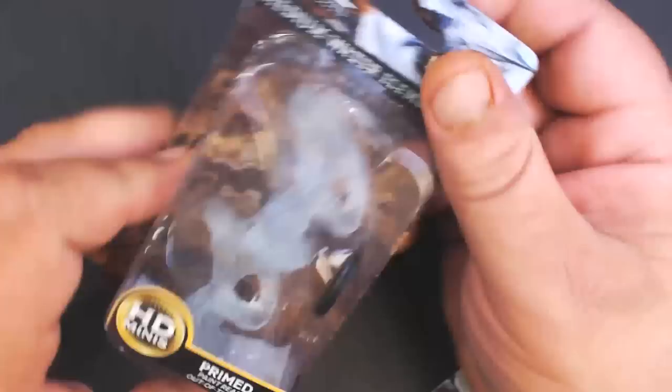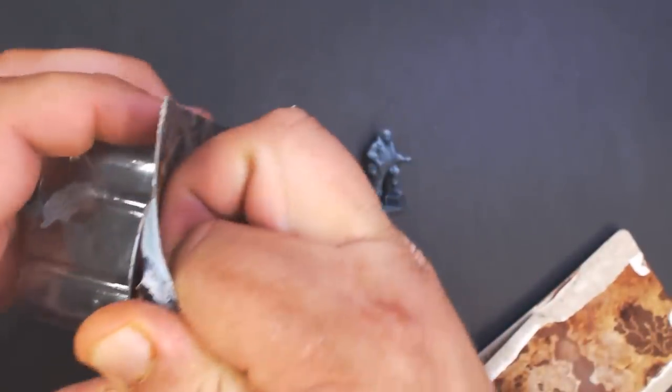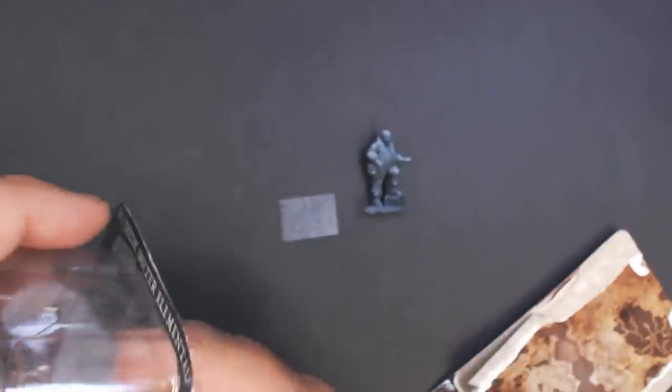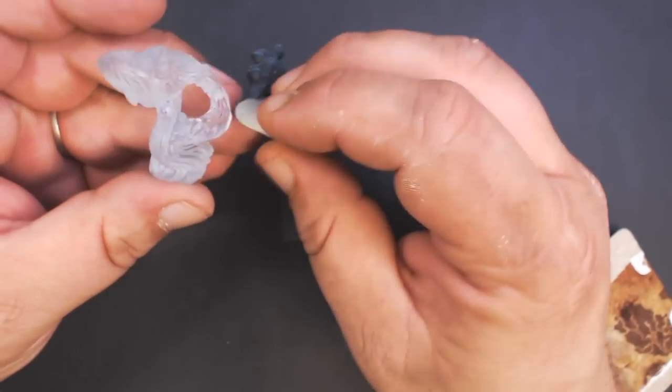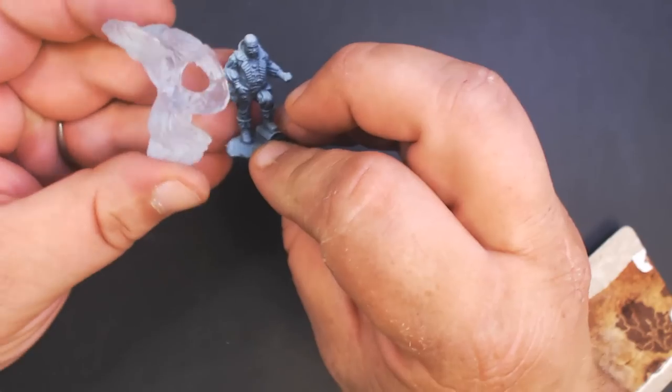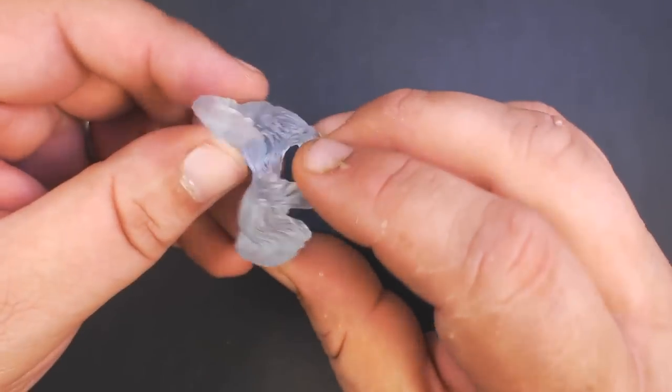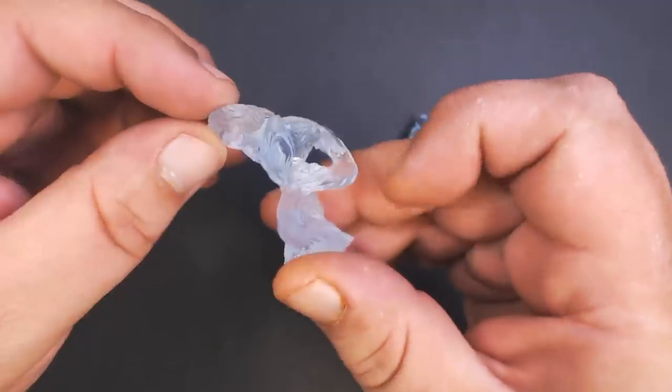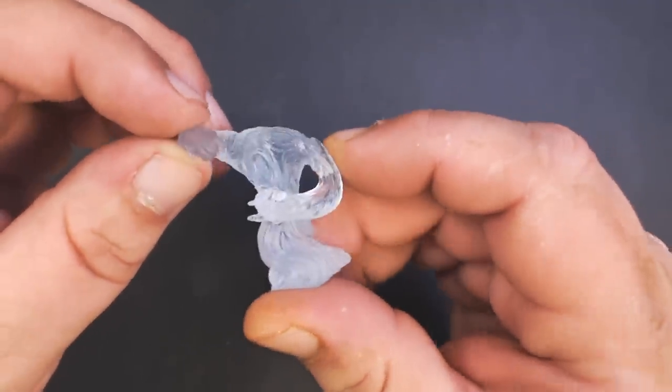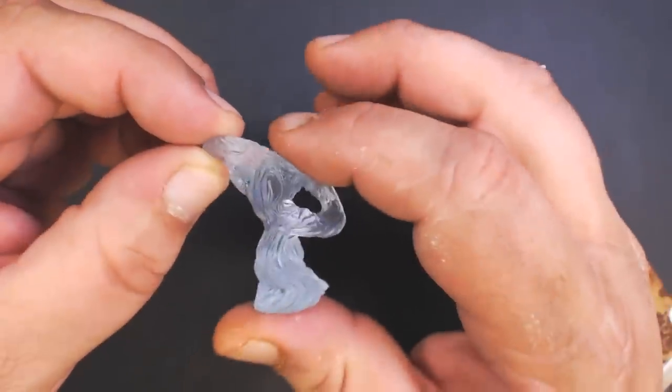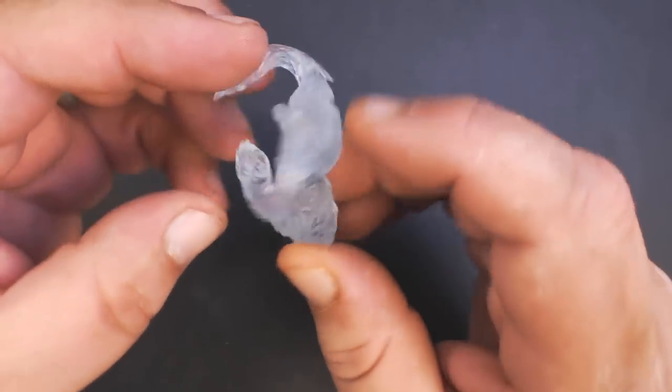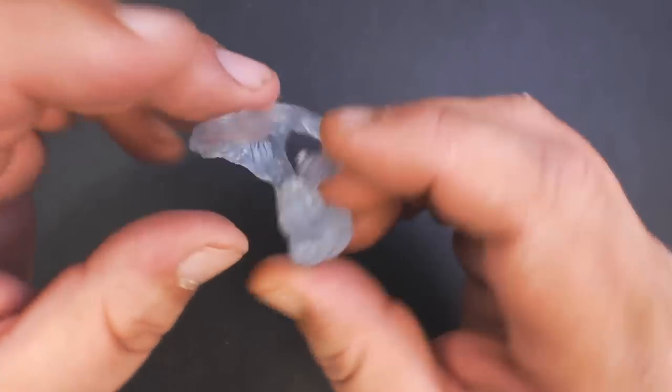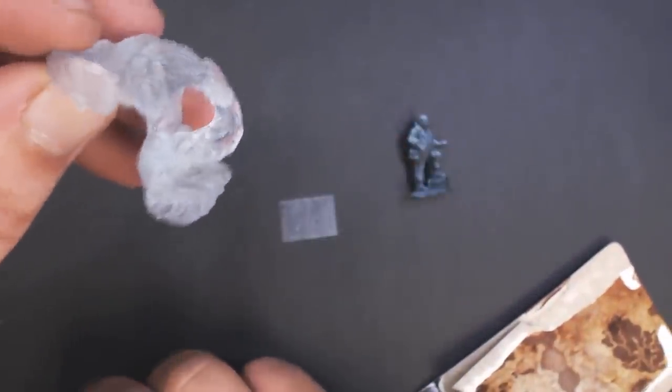Last of the elementals, we have the water elemental—once again just slightly bigger than a human. This one's pretty cool. He almost looks like Swamp Thing-ish from what I can see—he's got kind of a Swamp Thing from the old movie kind of face. Pretty cool, it's good to see different styles of the elementals, not the same old stuff we always see.